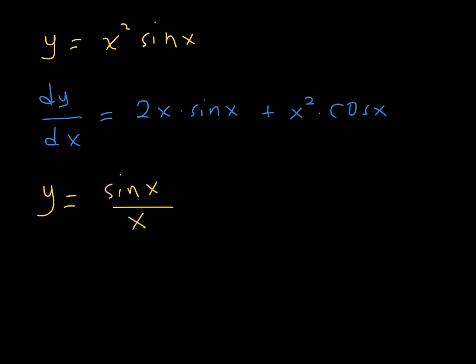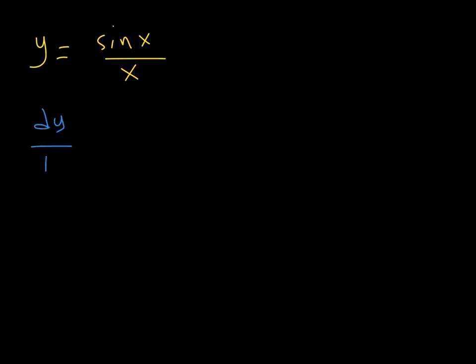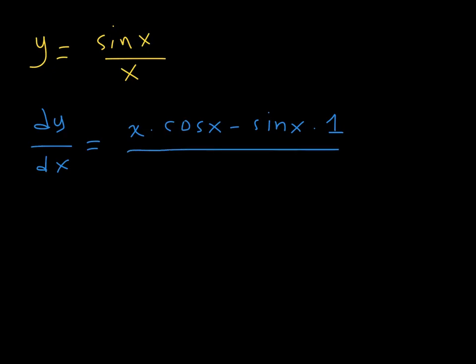For y equals sine of x over x, this is a quotient so we use the quotient rule. dy/dx equals the denominator times the derivative of the numerator minus the numerator times the derivative of the denominator, all over the denominator squared. This gives x times cosine of x minus sine of x, all over x squared.